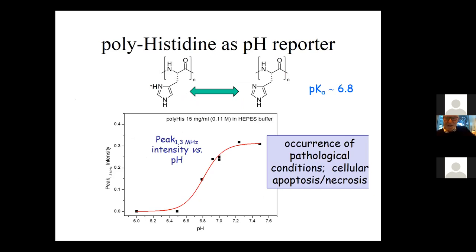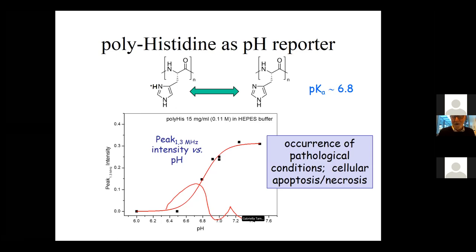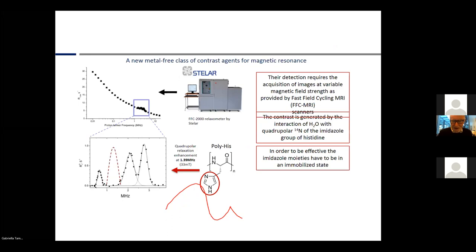Another property of such a system is that it is pH-responsive. The intensity of the quadrupolar peaks or relaxation enhancement is produced essentially at physiological pH between 7.2 and 7.4, whereas when the environment becomes acidic, there is progressive dissolution of the system and the intensity of quadrupolar peaks decreases, completely disappearing at pH 6.4. This means we have the possibility for a solid material to act as a responsive reporter of environmental conditions.